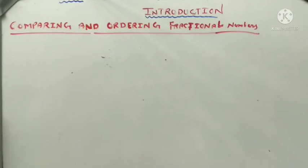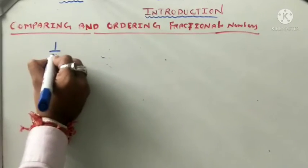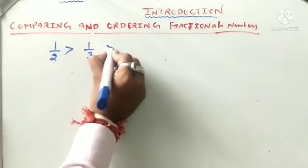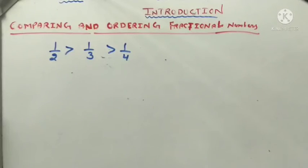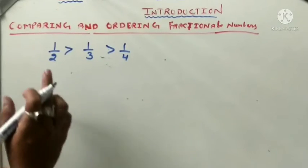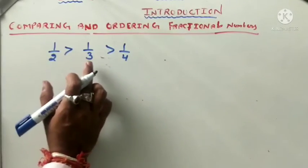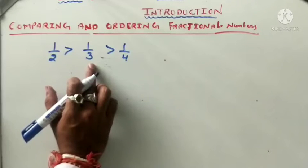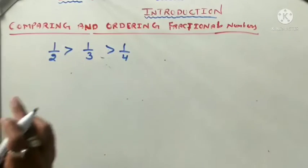Next topic is comparing and ordering fraction numbers. When the numerator is the same, the fraction with the smaller denominator is greater. For example, one upon two, one upon three, one upon four — one upon two is greater than one upon three, and one upon three is greater than one upon four.